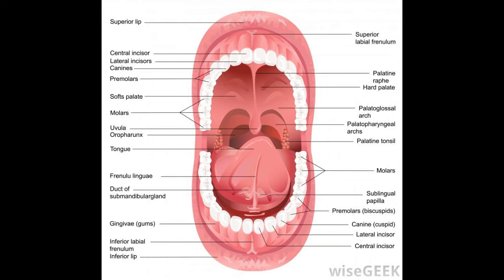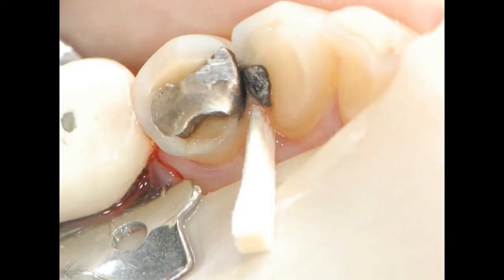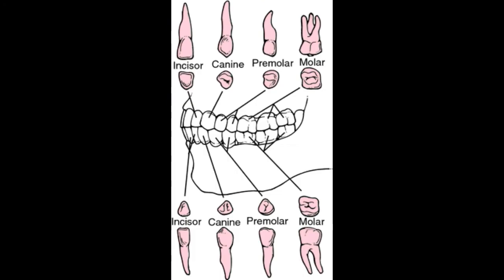Bicuspids typically have two cusps, one on the cheek or buccal side of the tooth, and one on the tongue or lingual side. Although bi is the prefix for two, a bicuspid tooth will sometimes have three cusps, with two on the lingual side.